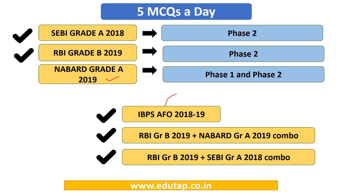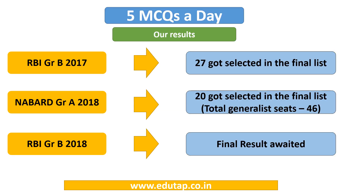We have also launched courses that are currently running. The first relates to IBPS AFO 2018-19, and the other two are combos — RBI Grade B plus NABARD, and RBI Grade B plus SEBI Grade A. Looking at our results: in RBI Grade B 2017 finals, there were 27 AdjuTabians, and in NABARD Grade A 2018, out of 46 total generalist seats, 20 were secured by AdjuTabians. We are awaiting RBI Grade B 2018 results and are confident they will come out with flying colors.